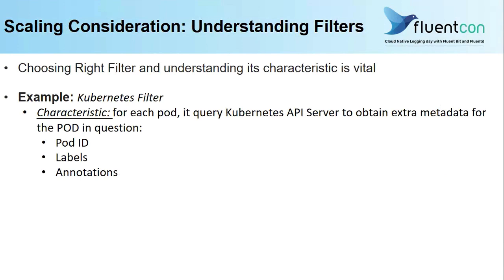Another aspect while talking about scaling is you need to choose the right filter and understand its characteristics. This is really vital when talking about scaling. Let's take the Kubernetes filter as an example. One of the characteristics of this Kubernetes filter is that for each pod, it queries the API endpoint to get extra metadata to enrich your logs — such as pod IDs, labels, and annotations.